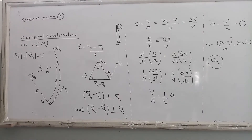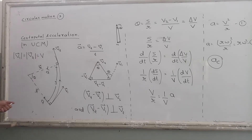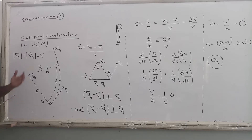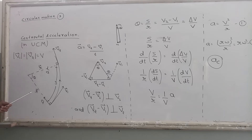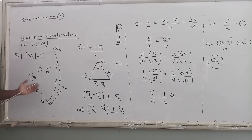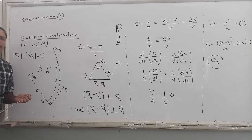This is part 3 of the video on circular motion. In this video we will discuss centripetal acceleration. In uniform circular motion, although we call it uniform, it is not actually uniform — it is accelerated motion. The speed of the particle is not changing, but because the direction is changing, this becomes non-uniform motion and there is a certain amount of acceleration.